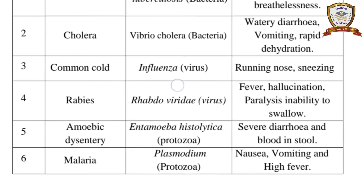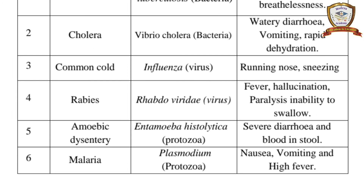Common cold: causative organism — Influenza virus; symptoms — running nose, sneezing. Rabies: causative organism — Rhabdoviridae (virus); symptoms — fever, hallucination, paralysis, inability to swallow.